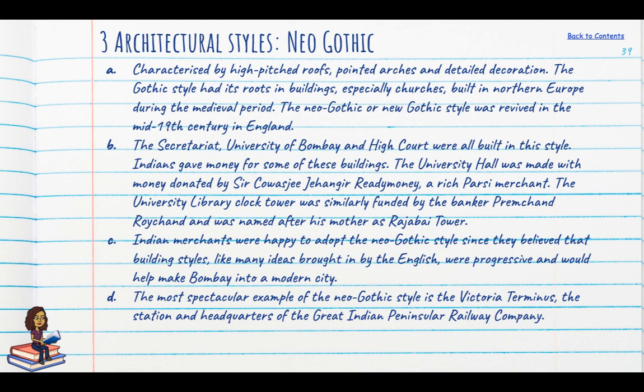The second architectural style was neo-gothic — characterised by high-pitched roofs, pointed arches and detailed decoration, with roots in medieval northern Europe, revived in mid-19th century England. The Secretariat, the University of Bombay and the Bombay High Court were all built in this style. Indians also donated money for some buildings — the university hall was funded by Sir Cowasjee Jehangir Ready Money, and the university library clock tower was funded by banker Premchand Roychand and named after his mother as the Rajabai Tower.